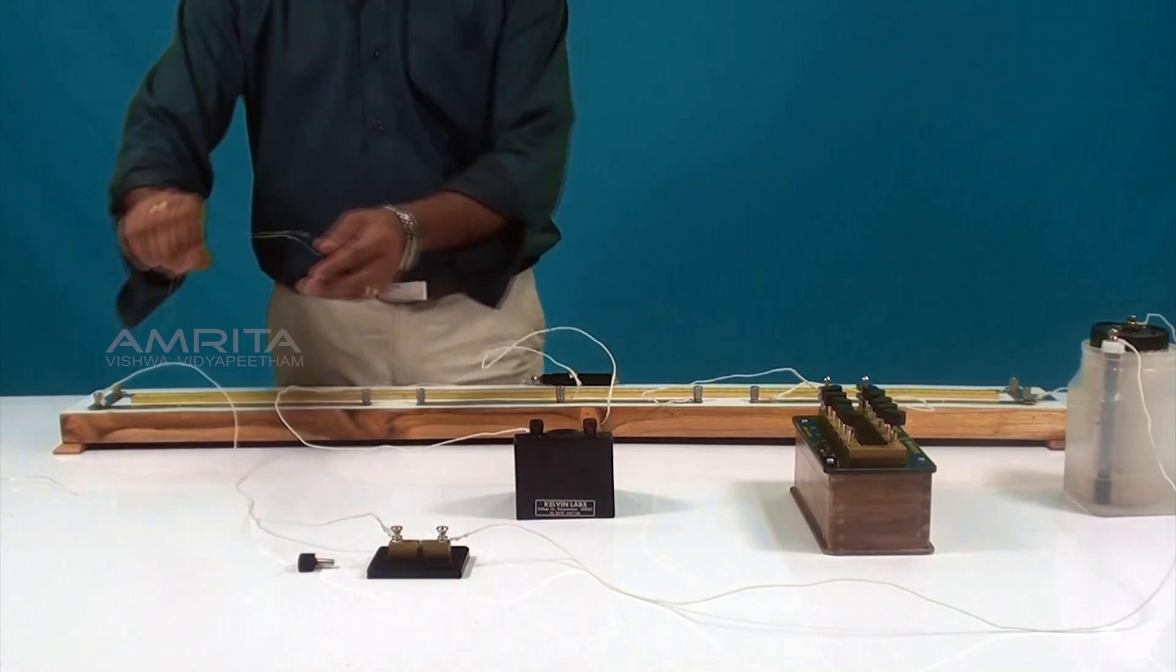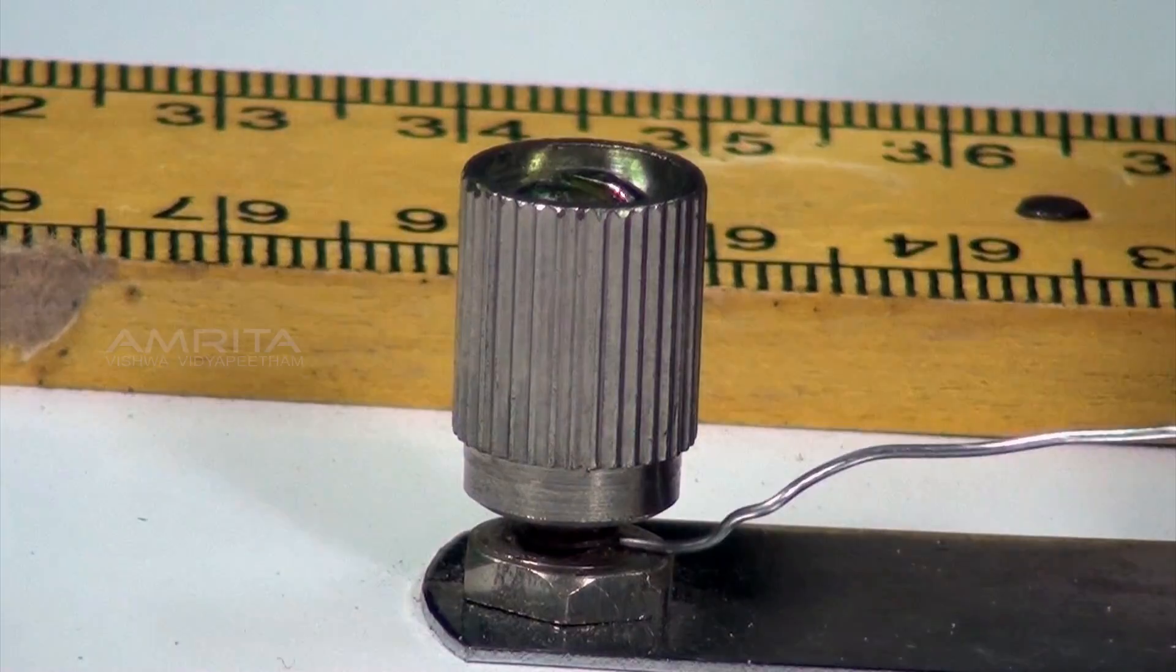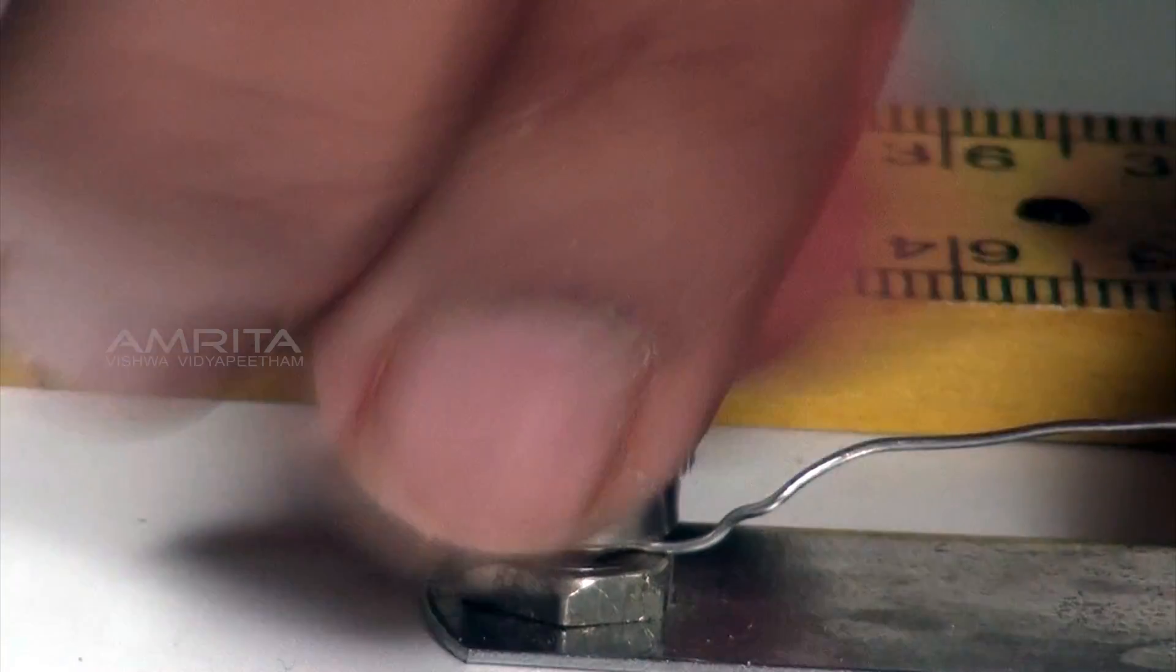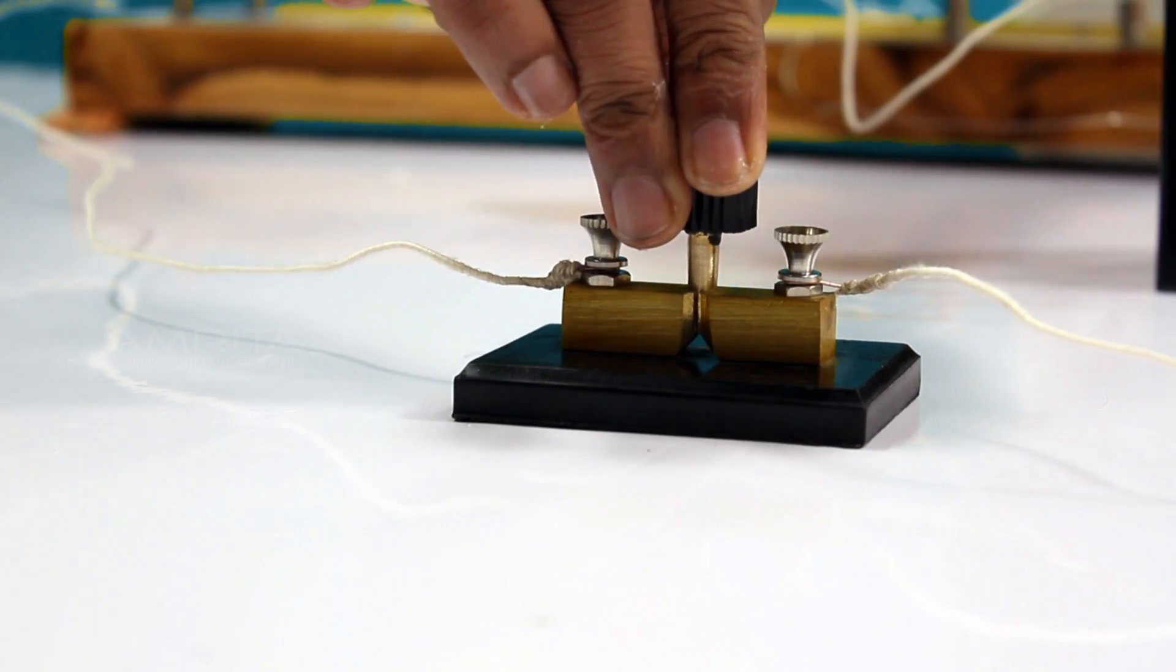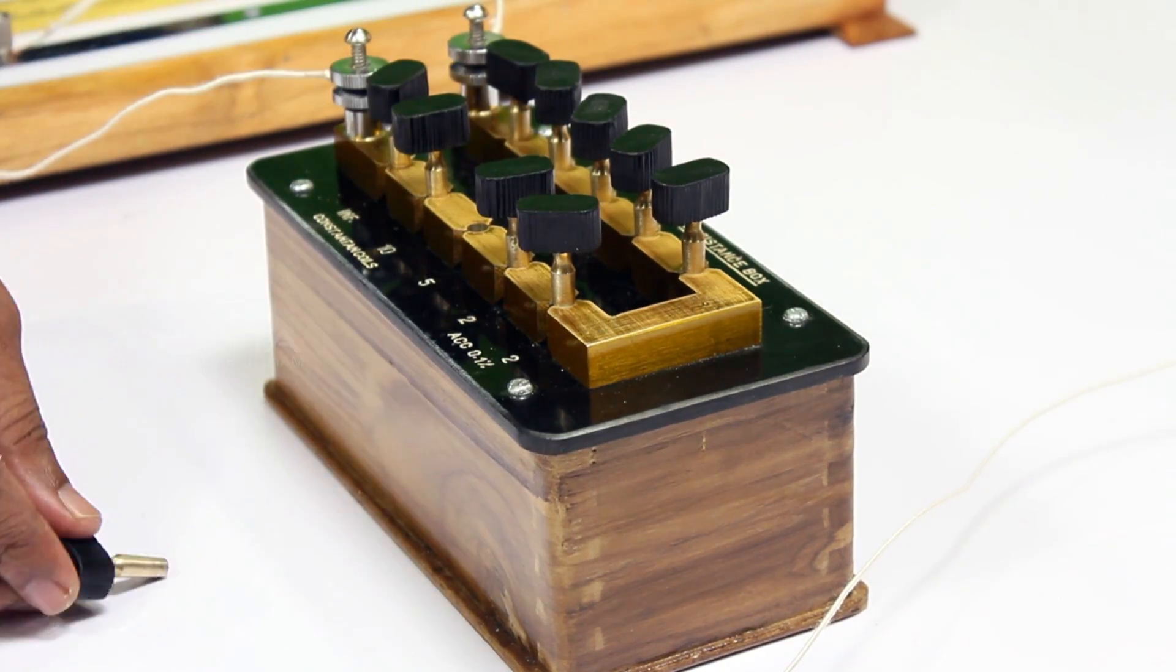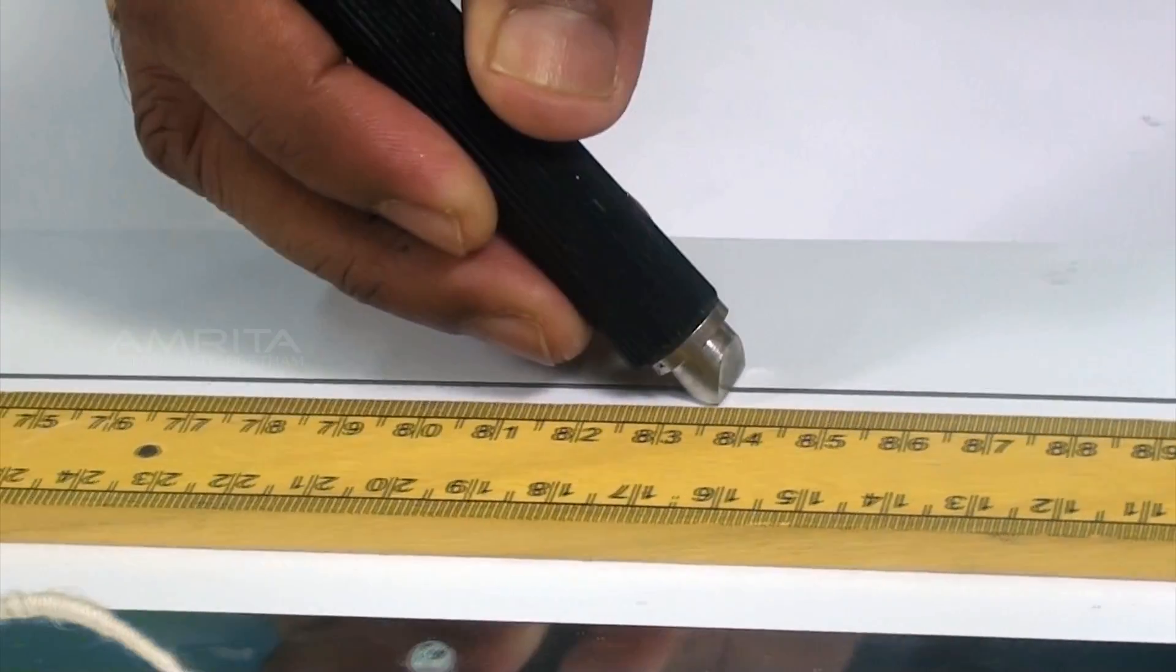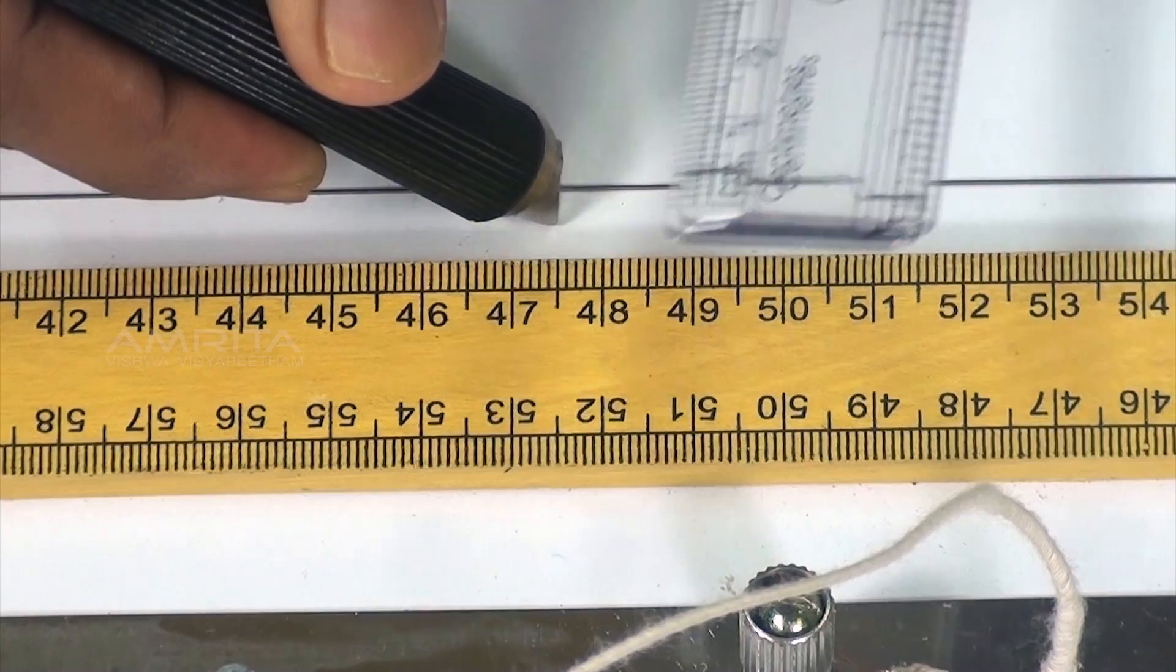Now take the new resistance wire R2 and connect it in the gap G2 of the meter bridge. Insert the key and repeat the same steps for finding out the mean resistance of the resistance wire R2.